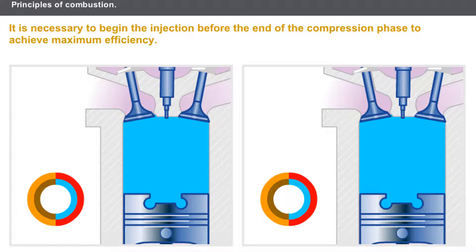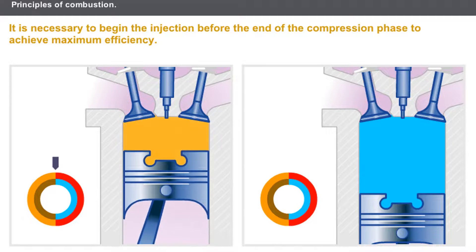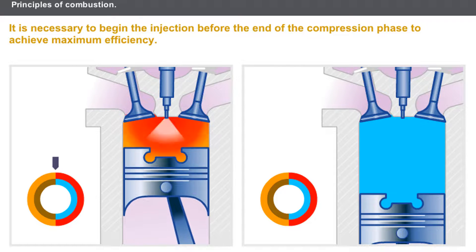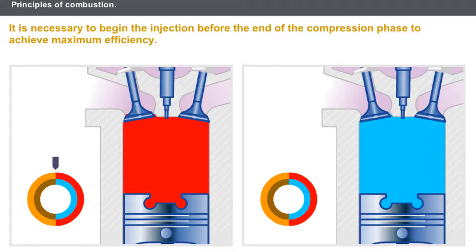Combustion of the mixture, even if it is explosive, is not instantaneous. If the injection takes place at TDC, the pressure due to combustion reaches its maximum when the piston has already descended. The force exerted on the piston therefore only applies to part of the power stroke, and the torque produced is low.